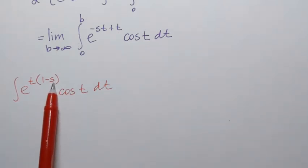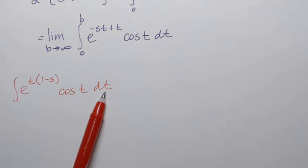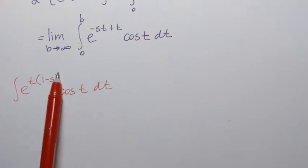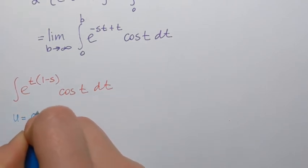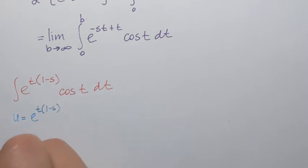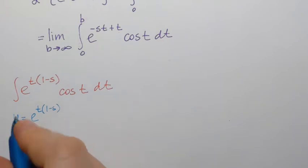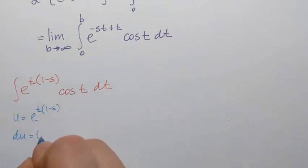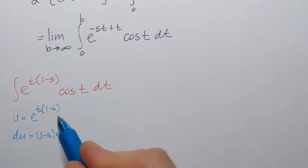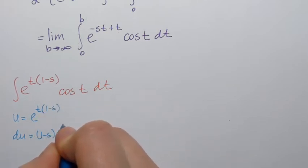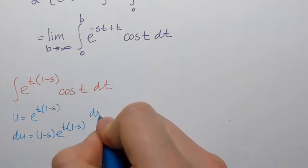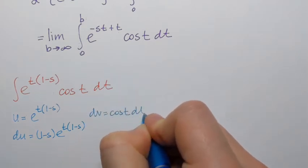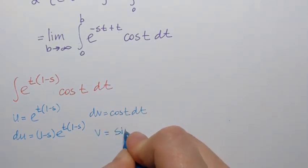Note that variable s is not the variable of integration here, so we treat it as a constant. That means 1 minus s is treated as a constant. To evaluate this integral we have to use integration by parts. If I let u equal e to the power t(1−s), then du will be — since that's the constant it goes in front — so (1 minus s) times e to the power t(1−s) dt. And dv is cosine(t) dt, which means v will be sine of t.